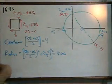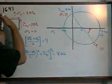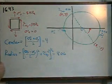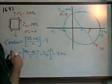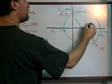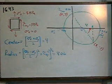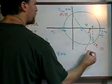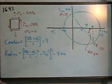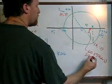Now, what is the angle here — how much do we rotate to reach the principal stress, where shear stress is 0? We have a horizontal difference of 4 (since 8 minus 4 is 4) and a height of 7. Taking the inverse tangent of 7 over 4 gives 60.3 degrees on Mohr's circle. Physically, that is 30.1 degrees.